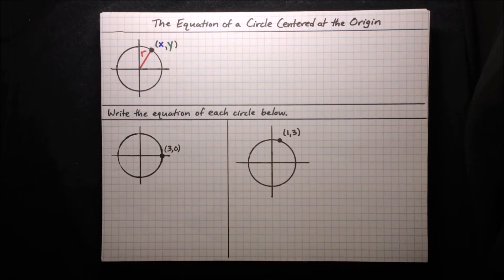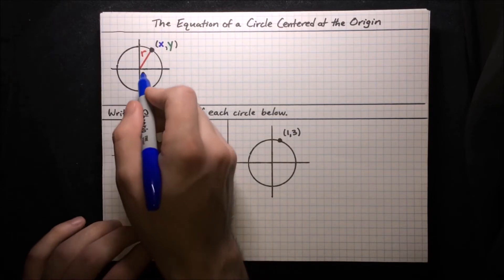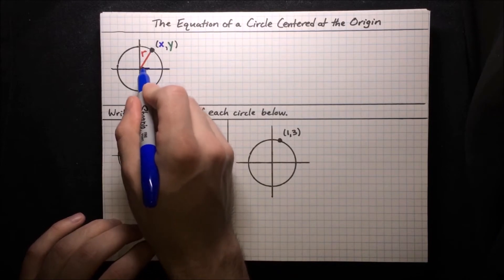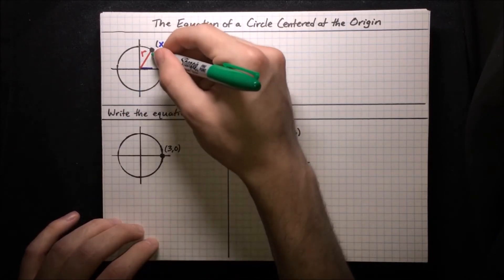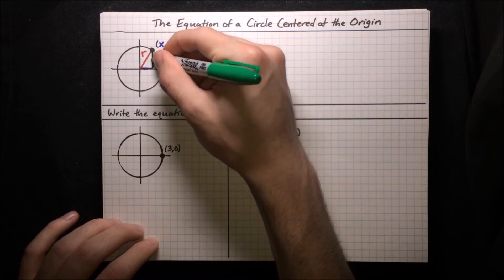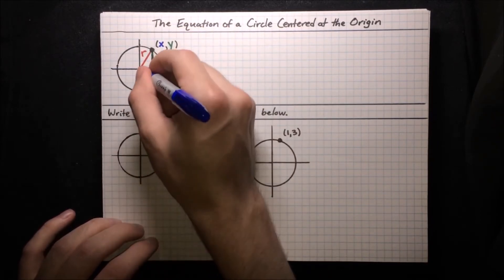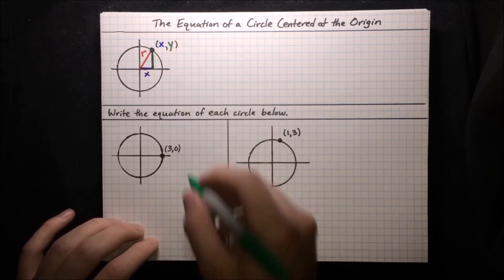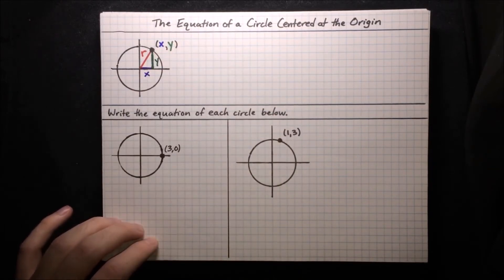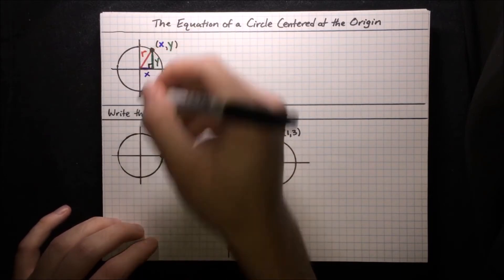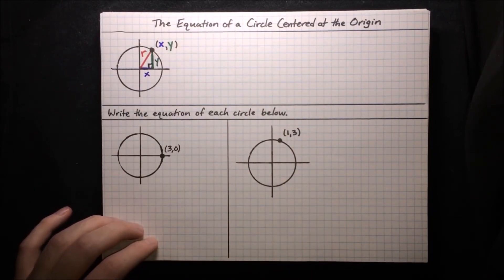One thing to notice about any point (x, y) on the circle is that it creates a right triangle whose hypotenuse is the radius. The x-coordinate forms one side in the horizontal direction, the y-coordinate forms the other side in the vertical direction, and the radius is the hypotenuse — the largest side. Since it's a right triangle, the Pythagorean theorem applies, giving us an equation relating the point (x, y) to the radius r.